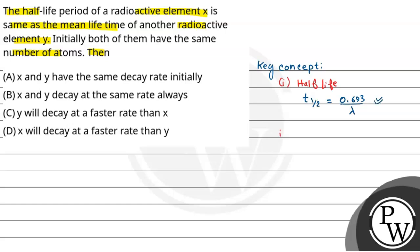And the average lifetime, or you can say mean lifetime — what is t-average? This is equal to 1 by lambda, where lambda is the decay constant.